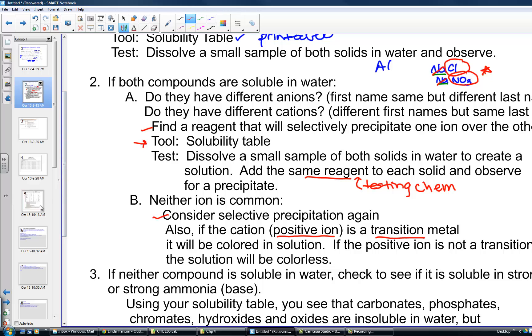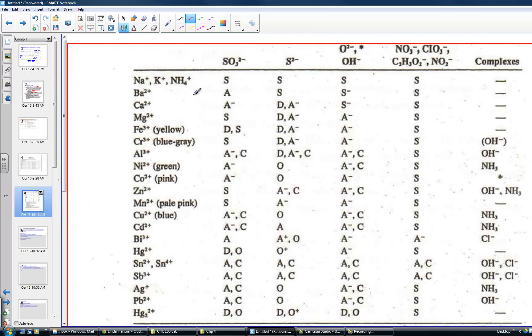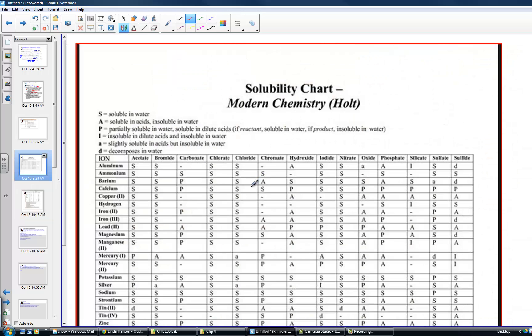Those colored solutions are part of your test taking packet or a link here in your Blackboard as well. Iron when dissolved is a transition metal and comes out a little yellow. Chromium has a bluish tinge to it, nickel is green, cobalt pink, manganese is also a paler pink, copper is blue. These certain transition metals have a distinguishing color. You can print this table as well, it's a link in your Blackboard.